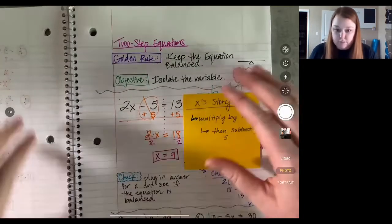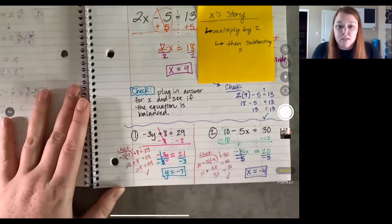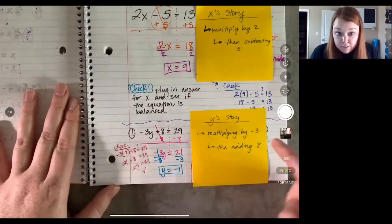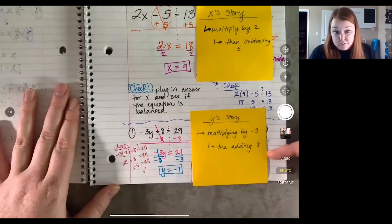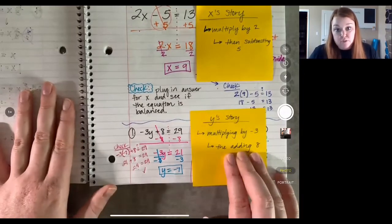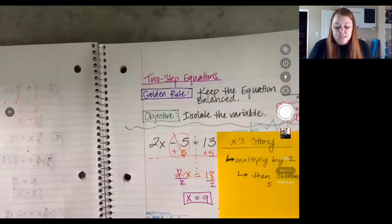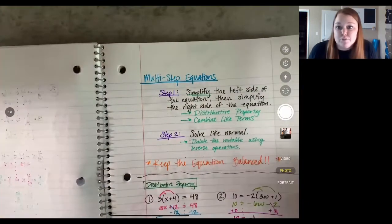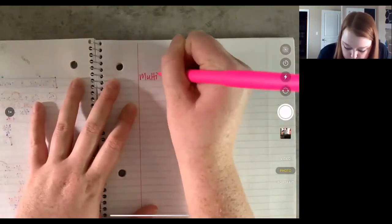If we look at example number one on this page — you're just listening, not writing it down — y is multiplying by negative three and then adding eight. To sneak up on y, we first got rid of the eight by subtracting eight, then canceled out the negative three by dividing by negative three. So we're going to take that same thinking for today's lesson: multi-step equations part two.